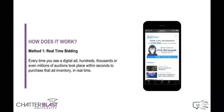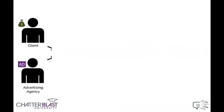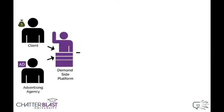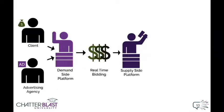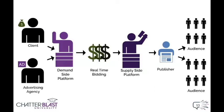Here's a simple flowchart to show you how it all takes place. First, the client or agency tells their demand-side platform, or DSP, how much they're willing to pay for a certain amount of impressions based on specific criteria like demographics or location. Next, the DSP enters an auction which is run by a supply-side platform, or SSP. The SSP then serves the ads and gives the money back to the publisher.